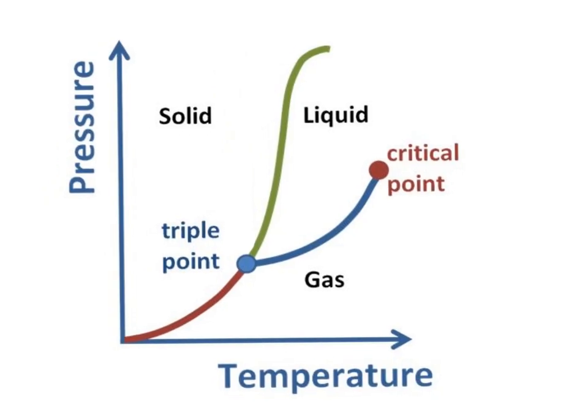And so this is a phase diagram. On the y-axis we graph the pressure, and pressure is increasing as we move up. And on the x-axis we include temperature, and so temperature increases as we move from left to right. There's a couple of interesting things that we can see with a phase diagram.